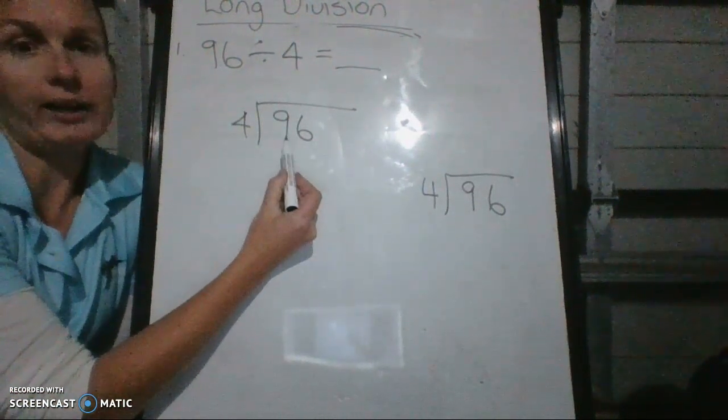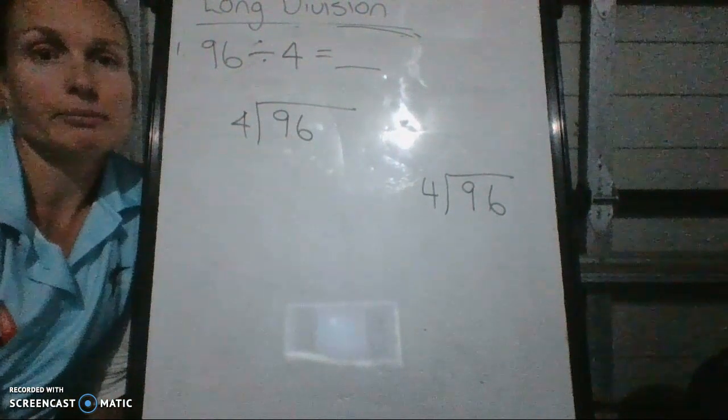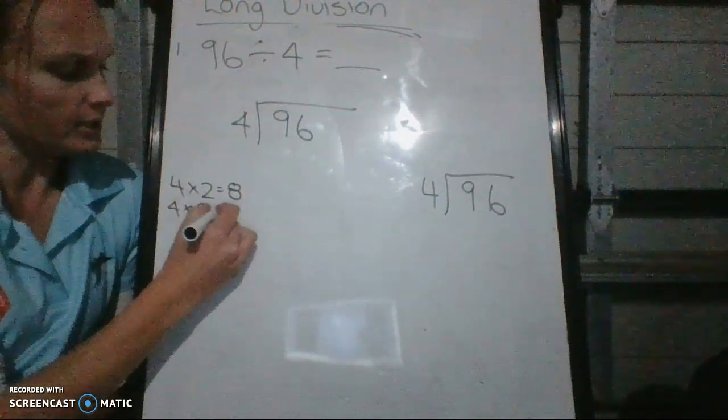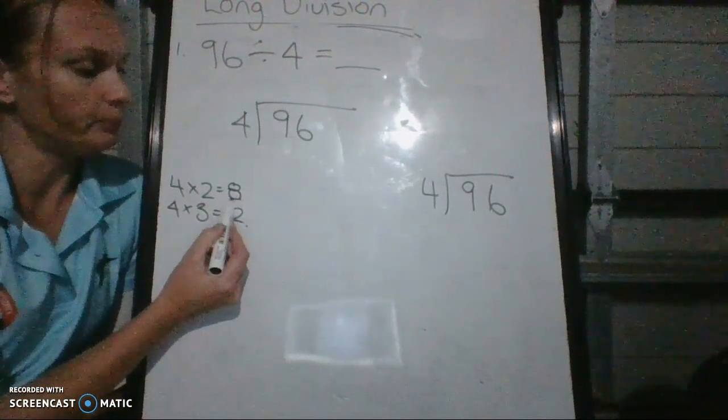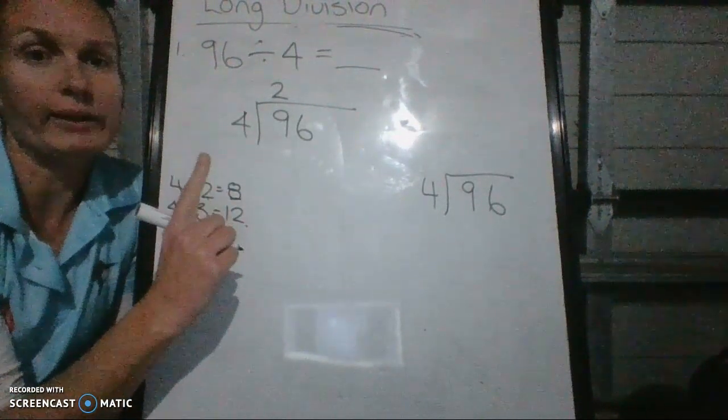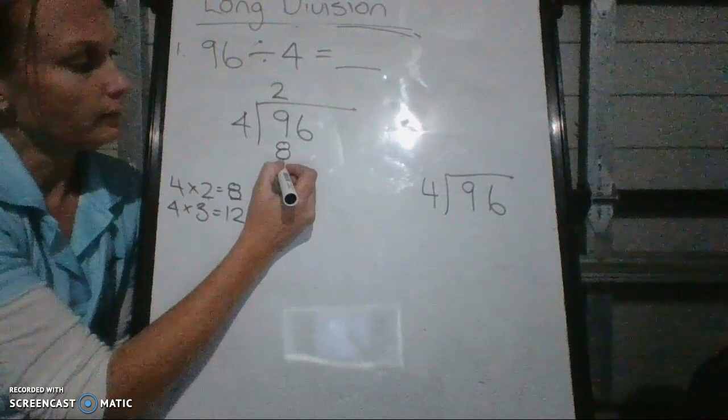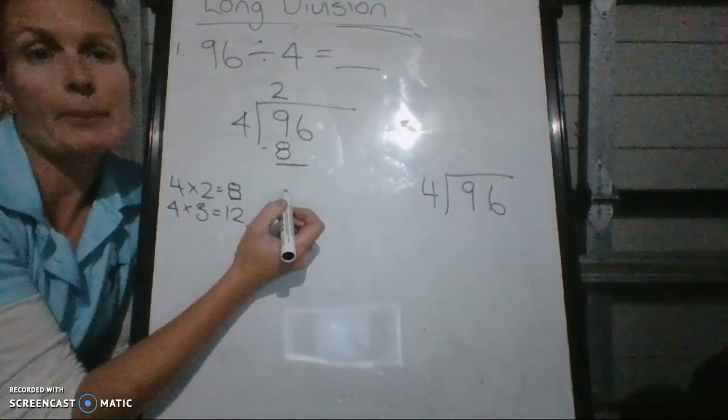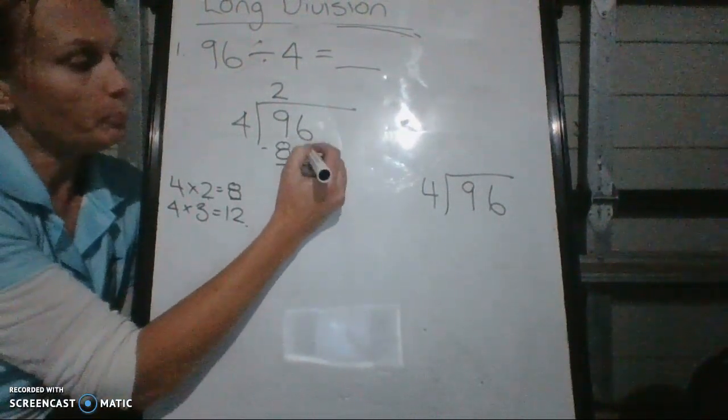So 4 goes into 9. How many times does 4 go into 90? Count it up. So you've got 4 times 2 is 8. 4 times 3 is 12. You can't go over. Has to be under. So this one. How many times does it go in? 2. And how much do I have left over? I have 1 left over. So now I'm going to multiply it. So 4 times 2 is 8. This is how I get how much left over. This is how I know what the next one I have to do.